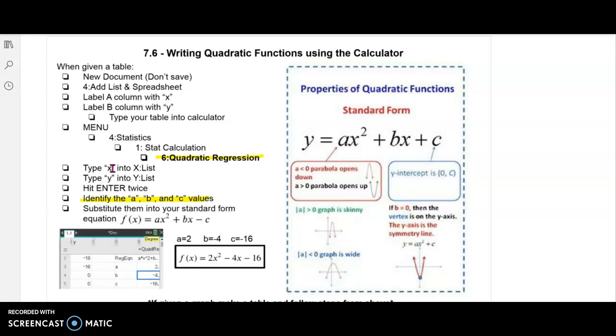So as an example, you can see the standard form right there, ax squared plus bx plus c. Once you have your a, b, and c, you replace them with those numbers.